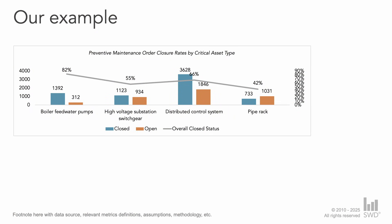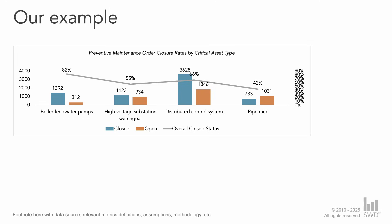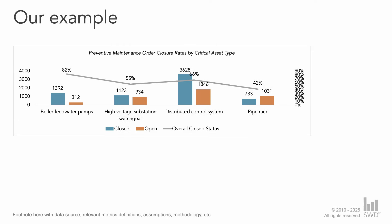This visual shows the status of work orders across four critical asset types within an engineering company. Along the horizontal axis we see each of the four asset types, and the primary left vertical axis plots the absolute number of orders within an asset type, broken down by closed (the blue bars) and open (the orange bars).